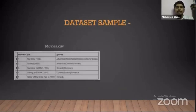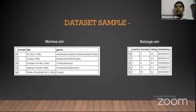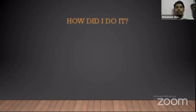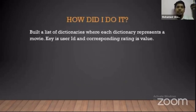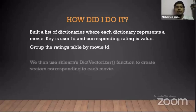I'll show you the dataset first. This is movies.csv, which has movie ID, title, and genres. Then there are ratings as well with respect to a particular movie. The first step was to build a dictionary — each dictionary entry represents a movie, with the key being user ID and the value being the rating of that particular movie. I grouped them based on movie ID.